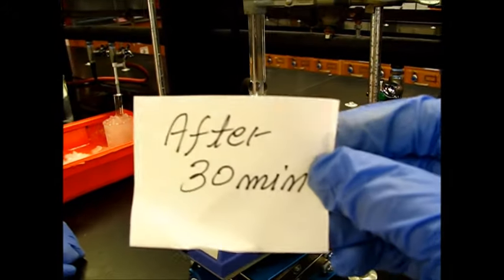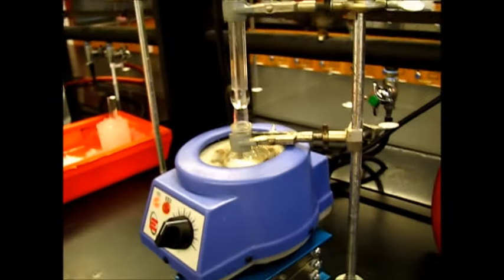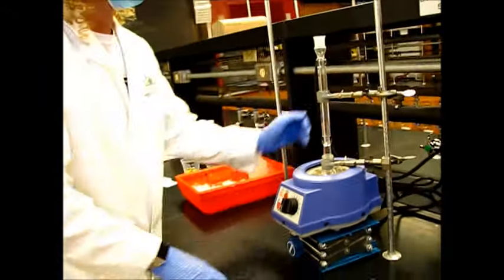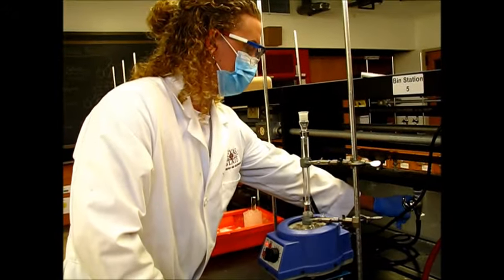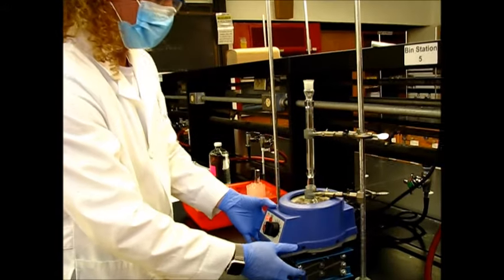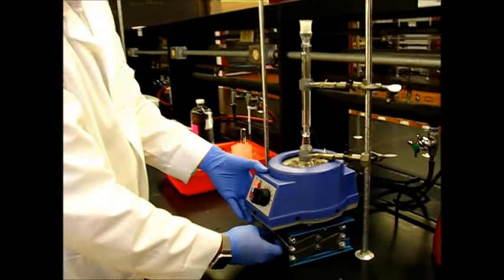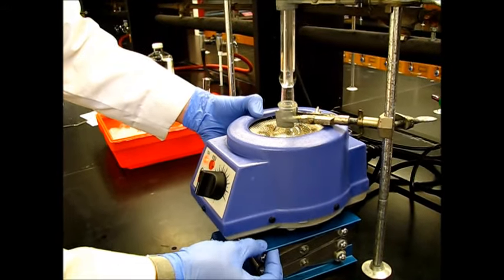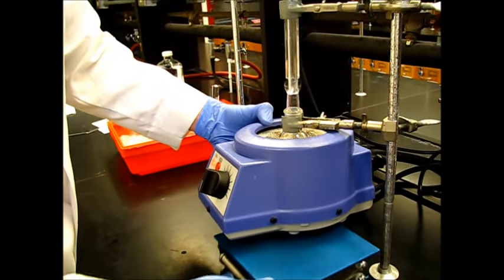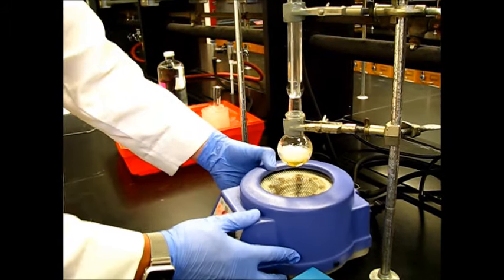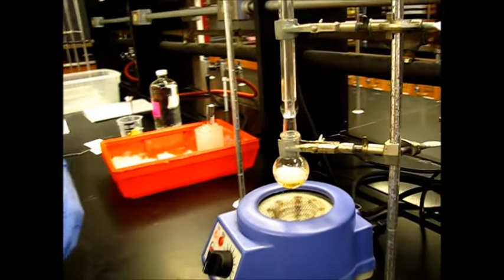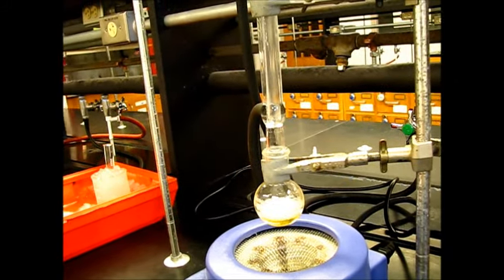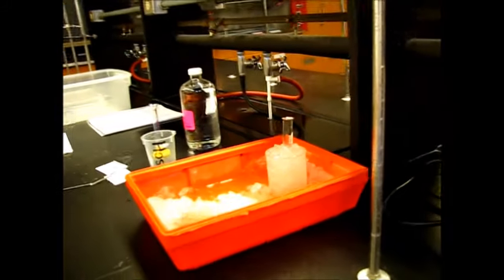So here we have completed 30 minute refluxing. So now what we're going to do is turn off the heat and turn off the water. We want to let this cool down to room temperature. So what we're going to do is just remove the heating mantle from right underneath it. And then just let this sit here until it cools down to room temperature where we're able to touch it. Once it's cool enough, we'll put it into the ice bath so it can really cool down.